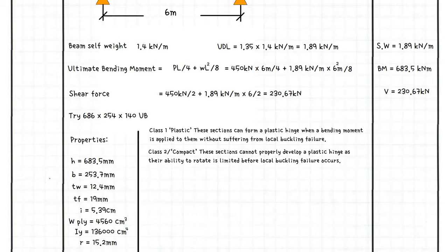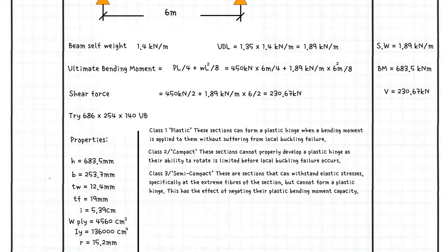Class 2, compact: these sections cannot properly develop a plastic hinge as their ability to rotate is limited before local buckling failure occurs. Class 3, semi-compact: these are sections that can withstand elastic stresses, specifically at the extreme fibers of the section, but cannot form a plastic hinge. This has the effect of negating their plastic bending moment capacity.